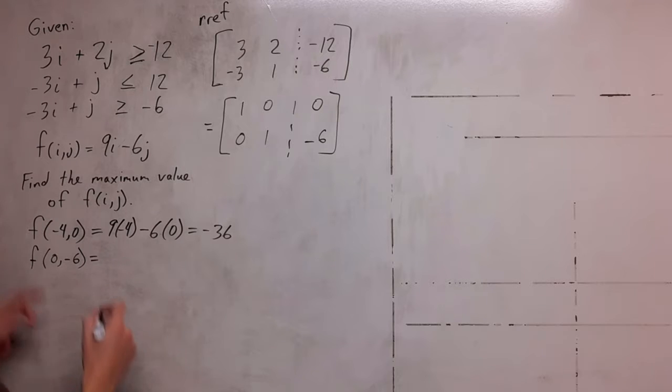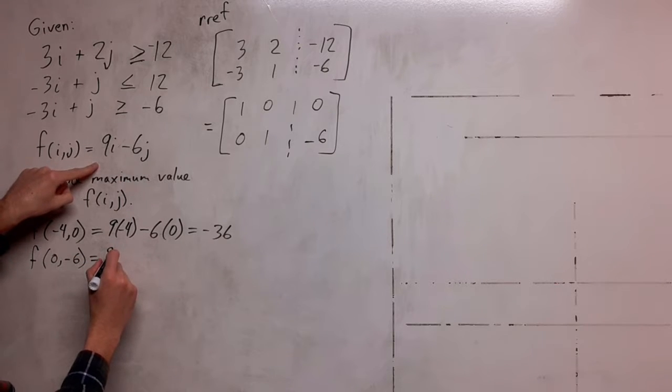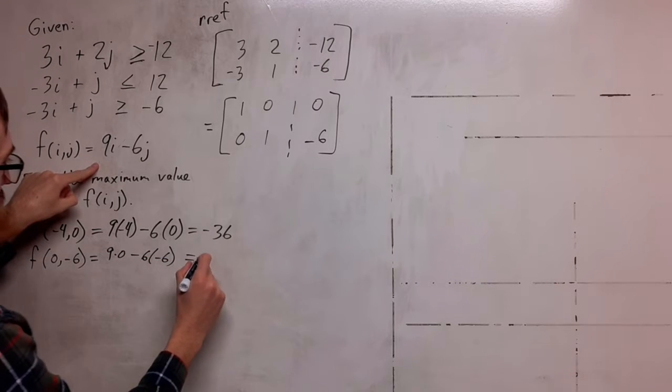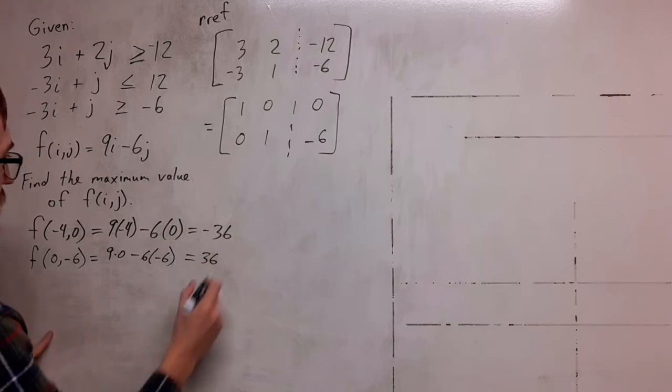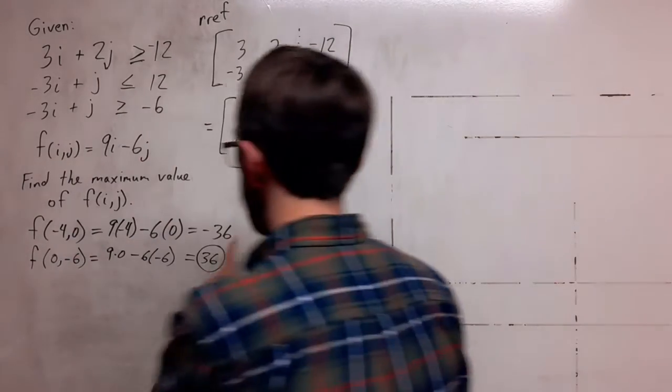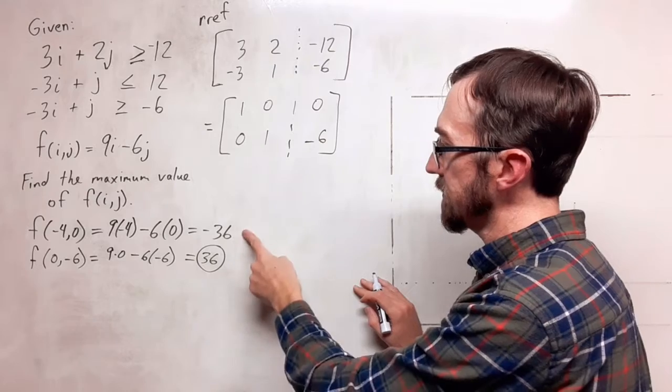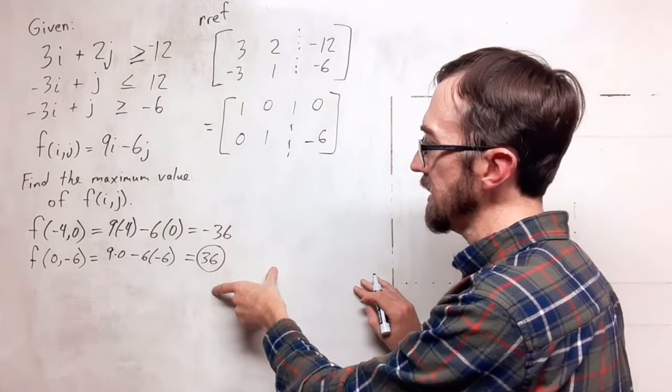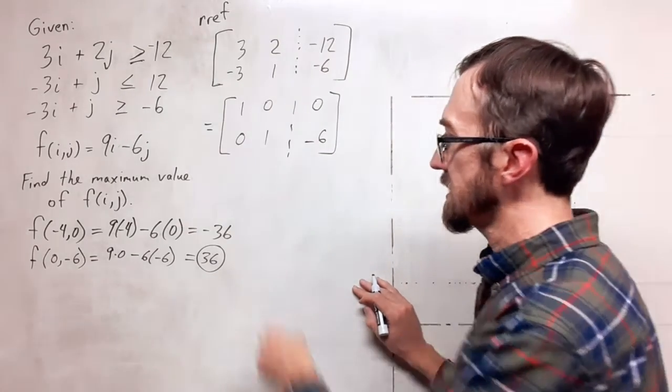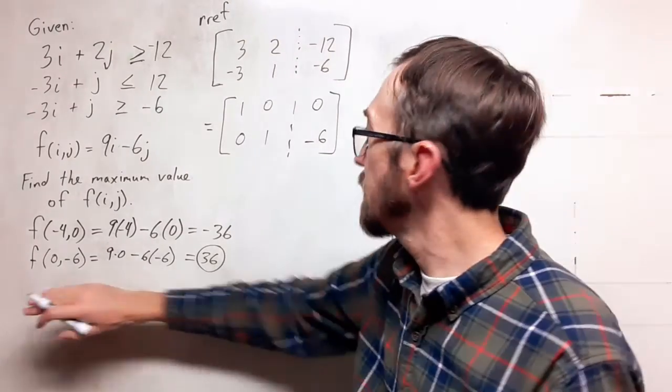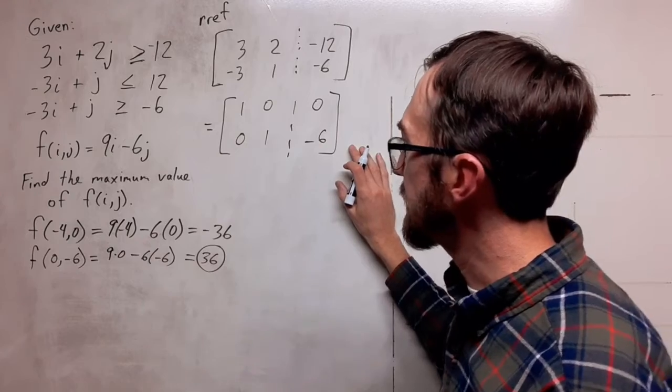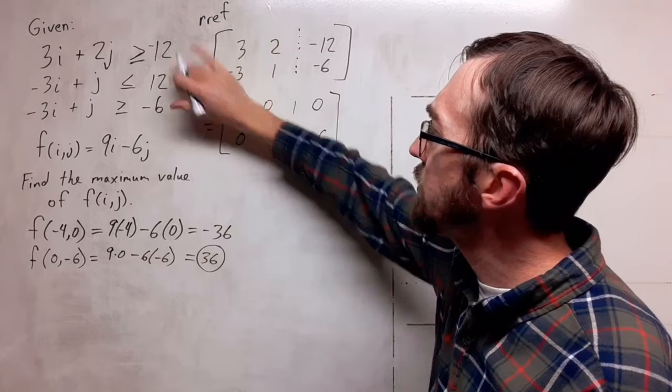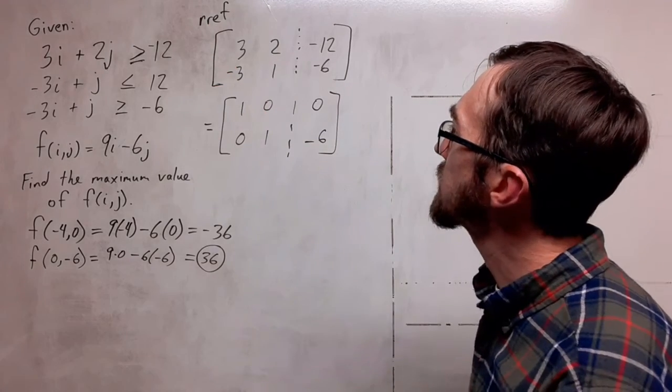And then we are going to simplify this, and we get a positive 36. Of the two numbers that we had as results, I had a negative 36 and a positive 36. The maximum value that we are getting is positive 36, and that is from the point 0, negative 6. So this should be our maximum value for this system of equations with this constraint function.